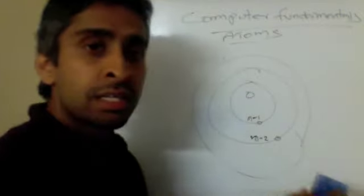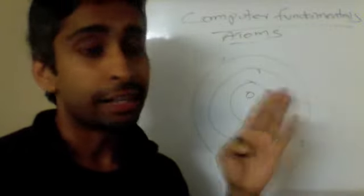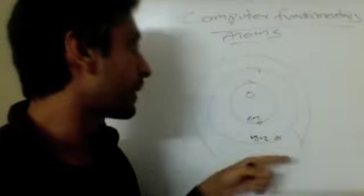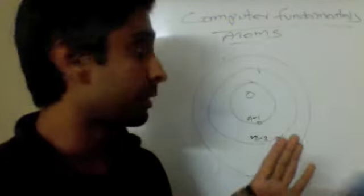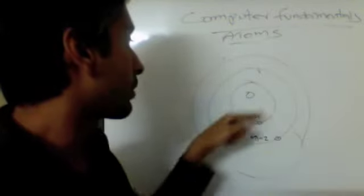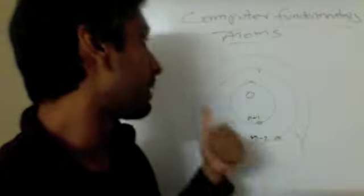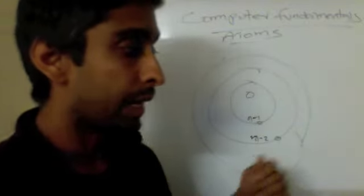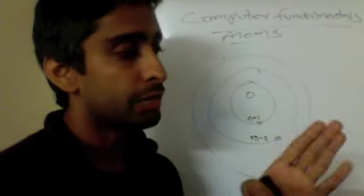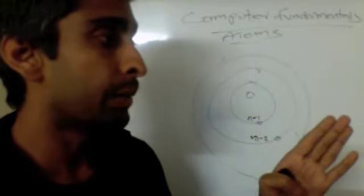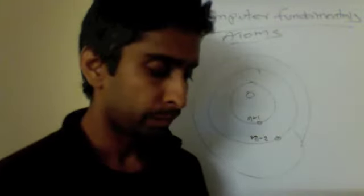Because electrons can only jump between specific allowed energy levels, there is a definite quantity of energy gained or released each time. That is why we see specific colors when electricity is passed through certain elements. Bohr also updated Rutherford's atomic model — Rutherford said electrons move around the nucleus but said nothing about energy levels, whereas Bohr said electrons orbit the nucleus at specific allowed energy levels. This was Bohr's atomic model.